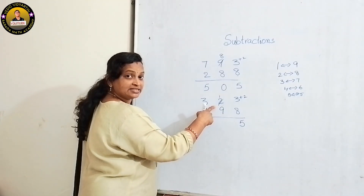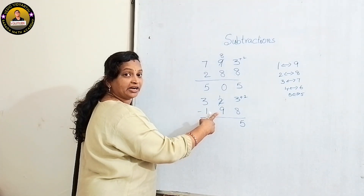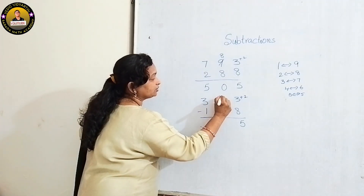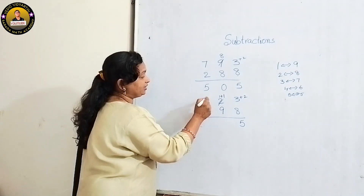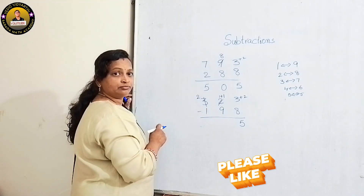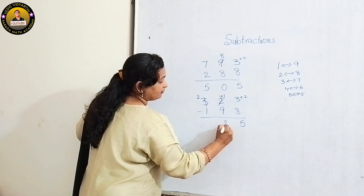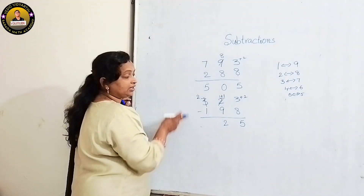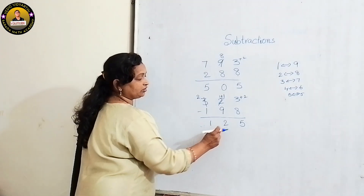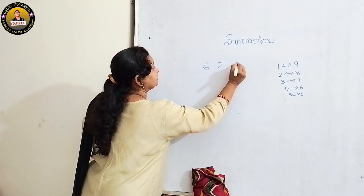3 plus 2 is 5. Now the tens place: 1 and 9 are mismatched — we can't subtract 9 from 1. Complement of 9 is 1. Add 1, and decrease 1 from the previous number, so 3 becomes 2. Then 1 plus 1 is 2. Last digit: 2 minus 1 is easily subtracted. The final answer is 125.